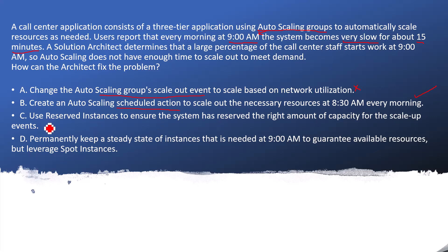Now let's evaluate option C: use reserved instances to ensure the system has reserved the right amount of capacity for the scaling event. This is wrong. Reserved instances mean you're paying for a one-year commitment, which is not a good answer for this scenario. Here we just want on-demand, pay-per-use capacity. So reserved instances can't be used here.